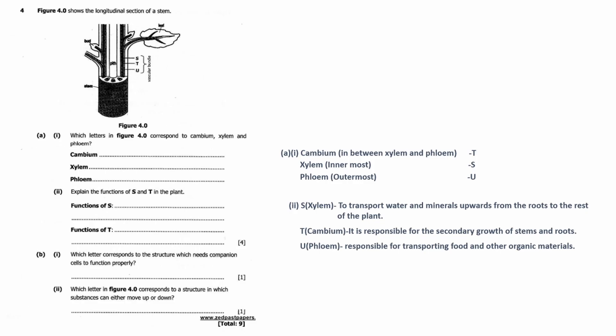And then part B, which letter corresponds to the structure which needs companion cells to function properly? So that's the phloem. And then which letter in Figure 4.0 corresponds to a structure in which substances can either move up or down? That's the phloem again.